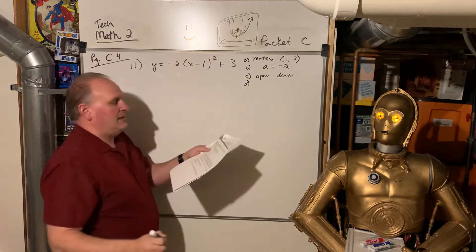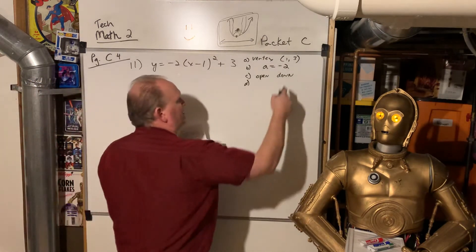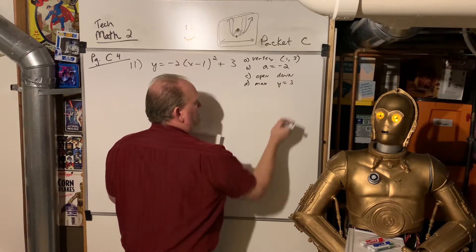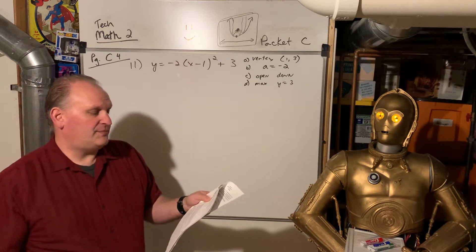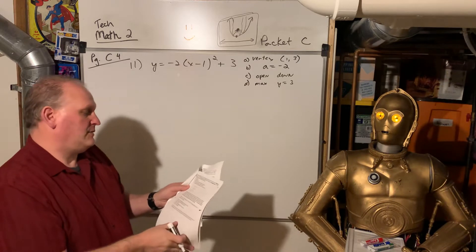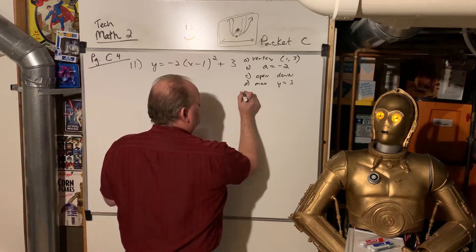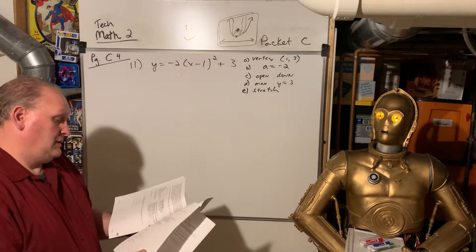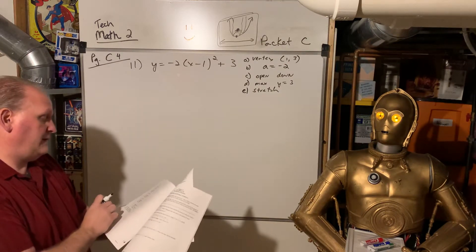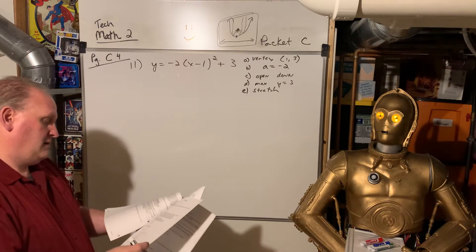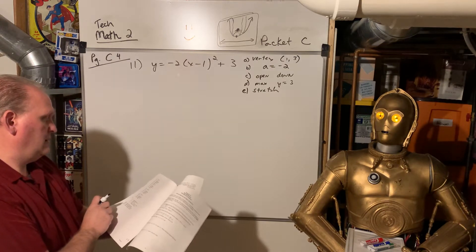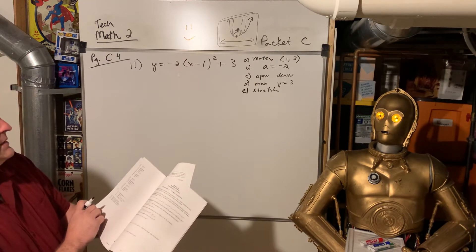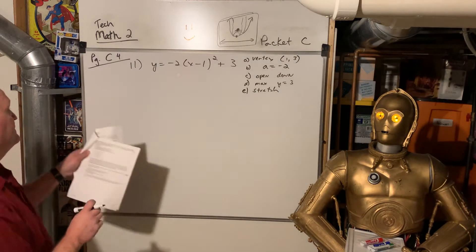And then, find the minimum or maximum value of y. Well, if we know the vertex, we know it's the maximum because it opens down and it's at y equals 3. And then, determine if the parabola is a stretch or a shrink. Well, that number is not fractional, so that's going to be a stretch. So it opens down, max, and stretch.